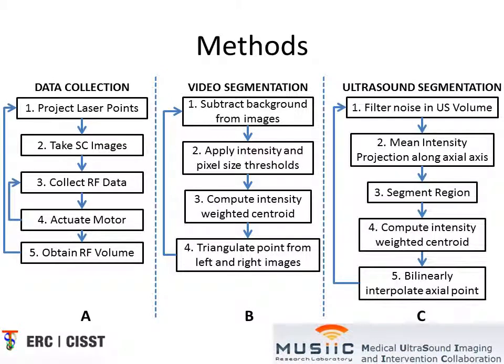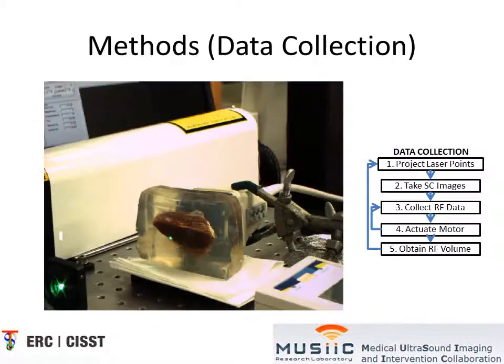We will briefly describe the methods and some of the outputs of specific steps. This is an example of a stereo camera image of our experiment using an ex vivo liver phantom. As you can see, the transducer is placed behind the phantom. This process is repeated for each of the laser spots as they are sequentially projected.